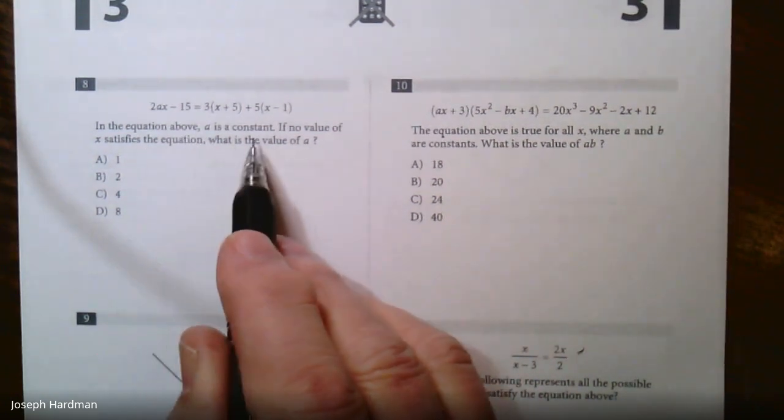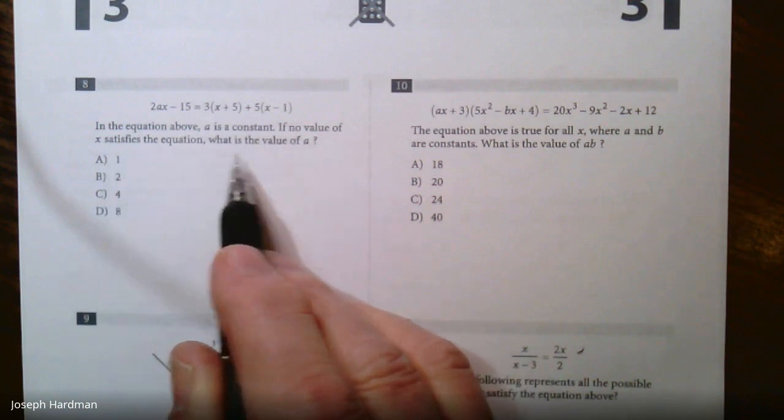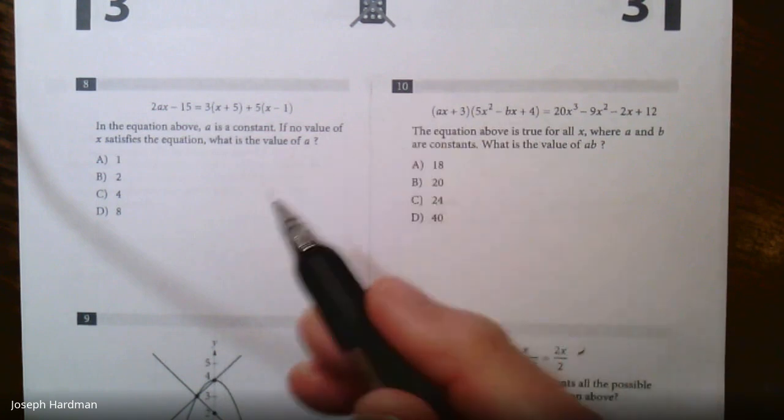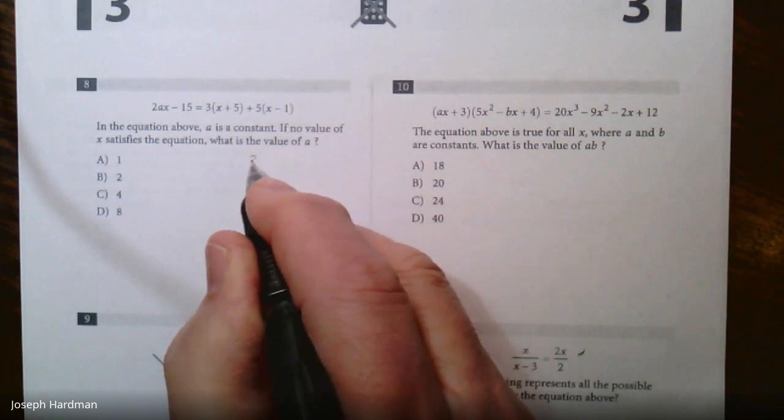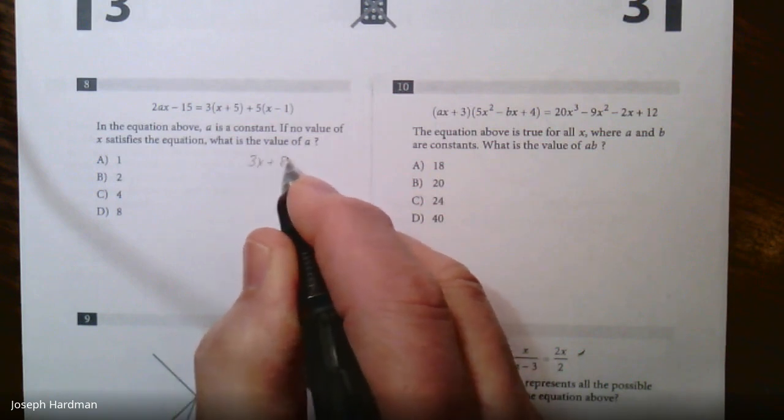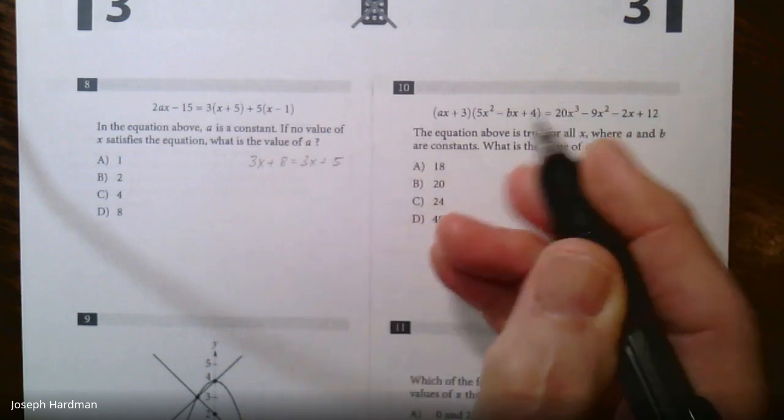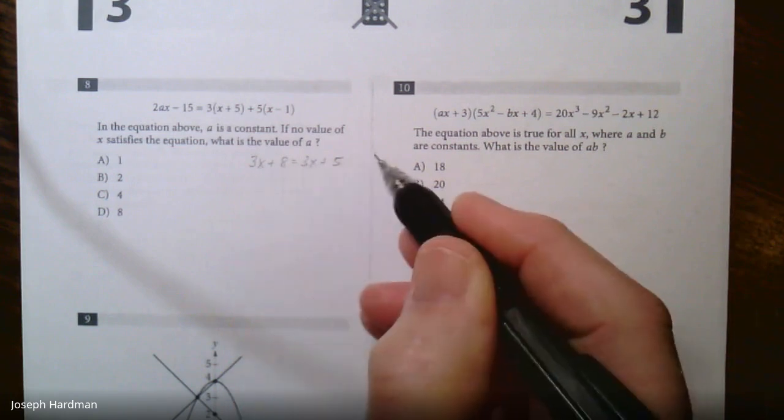Now let's look at number 8. It says in the equation above, a is a constant. If no value of x satisfies the equation, what is the value of a? That means we have a situation where there's no possible answer. An example would be something like if you did an algebra problem 3x plus 8 equals 3x plus 5. See, that is no answer because there's no number that you're going to put in here that's going to make it come true on both sides.